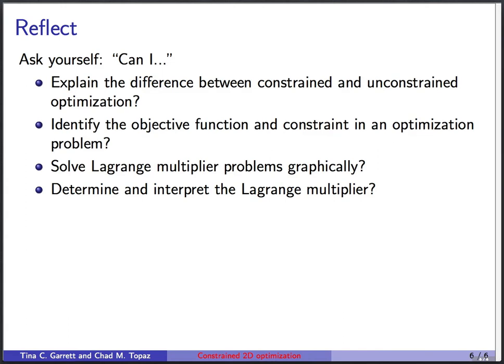Okay, here we've come to the end of the lesson. I want you to ask yourself if you can explain the difference between constrained and unconstrained optimization. If you can identify the objective function and the constraint in a Lagrange multiplier problem. If you can solve Lagrange multiplier problems graphically. And if you can determine and interpret the Lagrange multiplier. Thanks for listening.